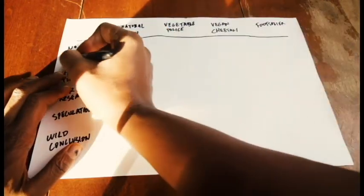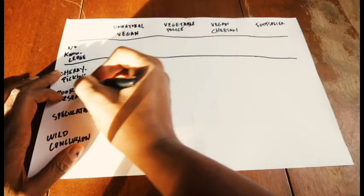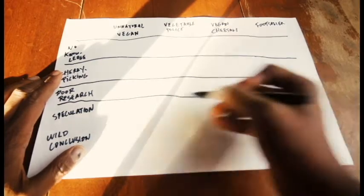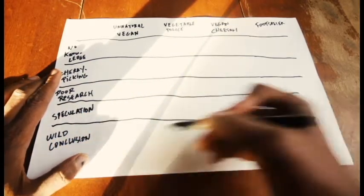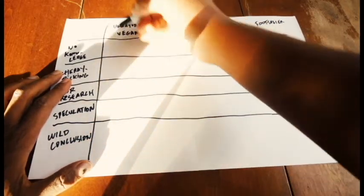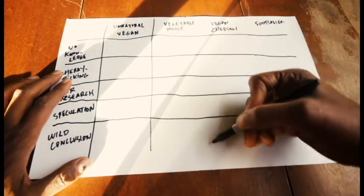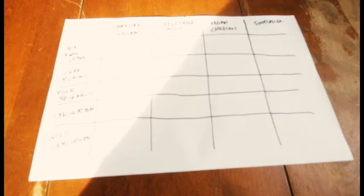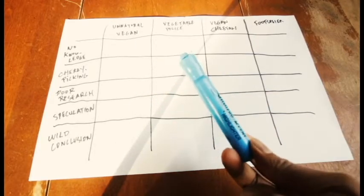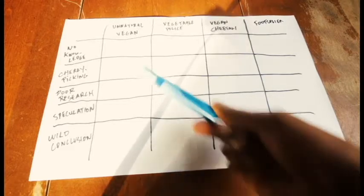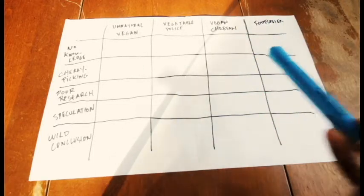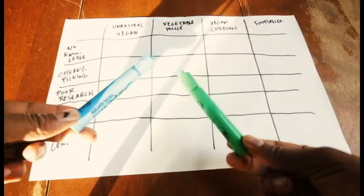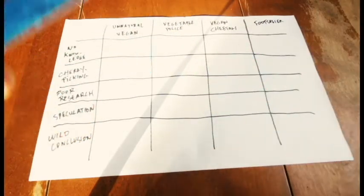So here are our folks that we're going to focus on, and here are our criteria: no knowledge, cherry-picking, poor research, speculation, and wild conclusions. We're going to give us some grid lines here as well to make this as scientific as possible. We're going to use blue because blue is for boys and most of these are boys. And we're going to use green because I just like green. The combination of these colors is going to make this a really scientific looking chart.